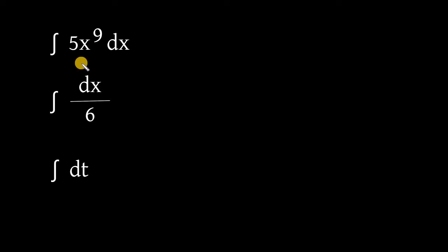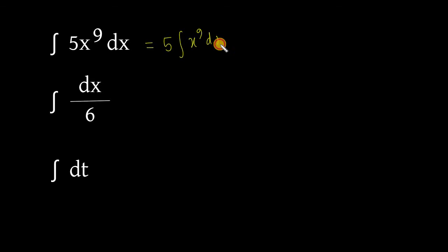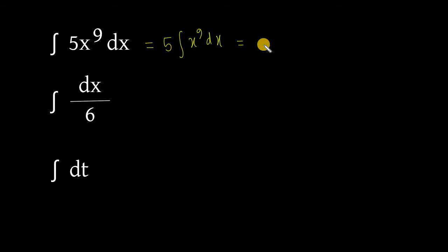Integral of 5x to the bar 9 dx. Ekhane 5 hoche kona constant. Aamra 5 baire reni aaste paari — 5 into integral of x to the bar 9 dx. Paatsi aamra correct. Ekhon x hoche kane cholo ebang 9 hoche kona constant. Taahle aamra ekhane integral of x to the bar n dx e shutra proyek korte paari. Aamra jani integral of x to the bar n dx equal to x to the bar n plus 1 divided by n plus 1 plus c.